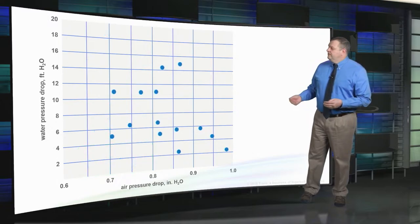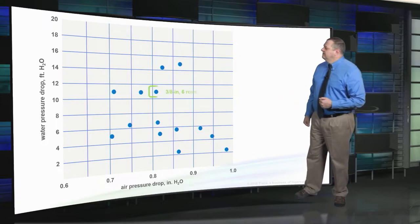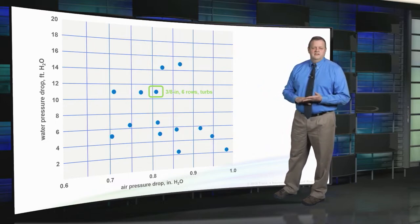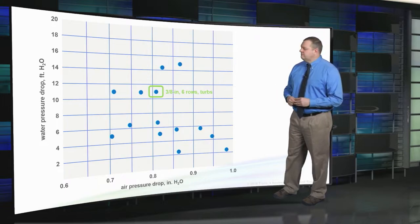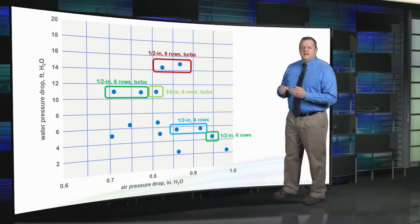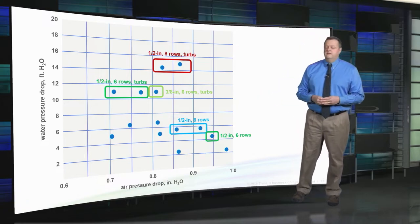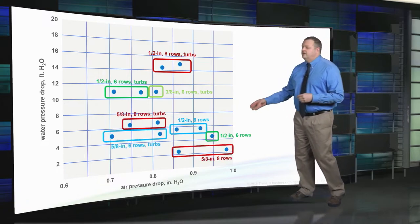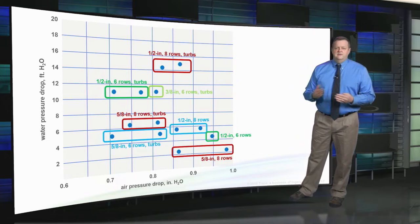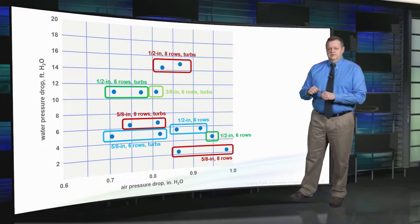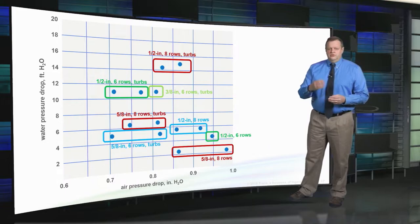This leaves 14 options. One coil uses 3/8 inch tubes, making it the least expensive choice. A group of coils uses 1/2 inch tubes — some with 6 rows, some with 8, with or without turbulators. The last group uses 5/8 inch tubes, again 6 or 8 rows, with or without turbulators. Turbulators are devices inside the tubes that increase fluid turbulence, which improves heat transfer.